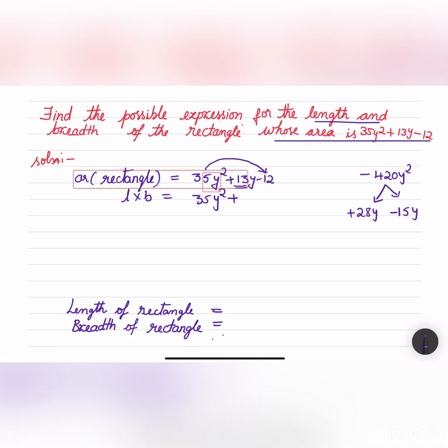Now the common terms of the first two terms are 7y. Then 7 times 4 is 28, and -3 is common in the next two terms. So -3 is common, thus we get 7y(5y + 4) - 3(5y + 4).